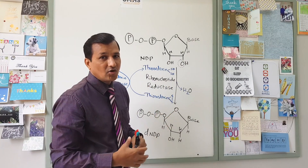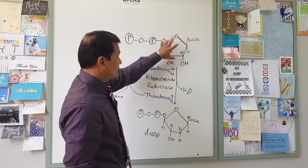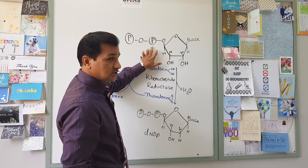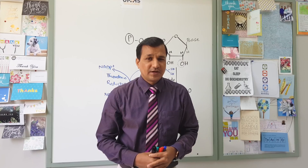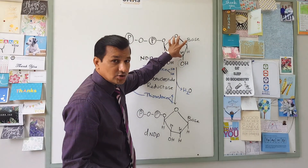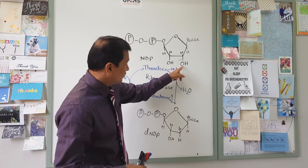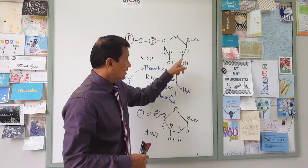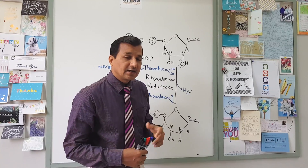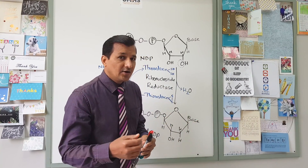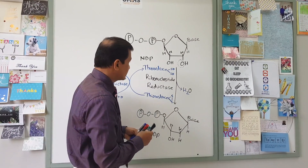Depending on the base present, you can replace NDP with ADP, GDP, CDP, or UDP. In general it is written as NDP — nucleotide diphosphate — because there is a base, sugar, and two phosphates attached to the sugar. Now to synthesize DNA you need deoxynucleotide diphosphate, meaning the ribose sugar present here, which is a pentose sugar, has to be in deoxy form. To make ribose into deoxyribose, you need to remove the oxygen atom in the hydroxyl group at the second carbon.